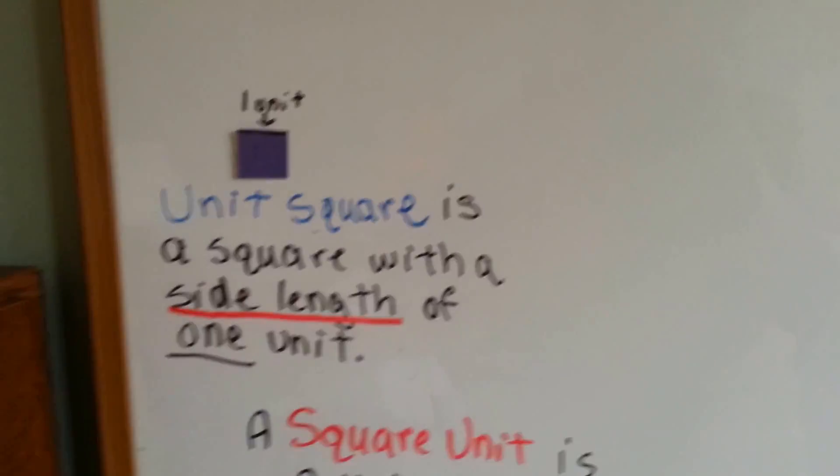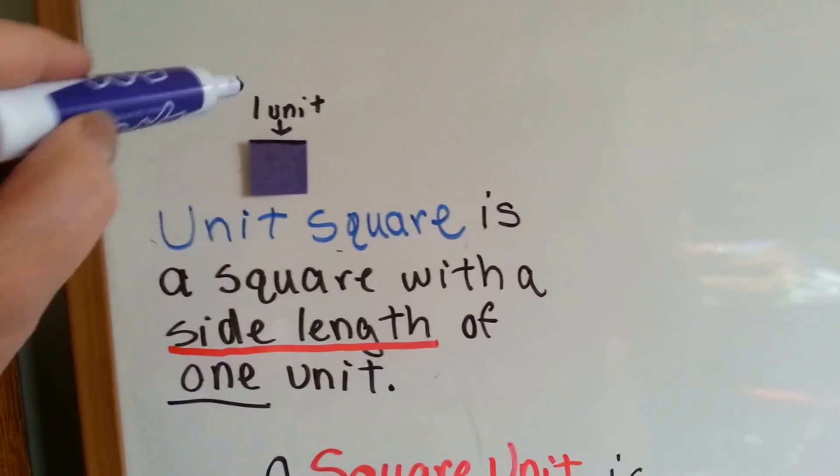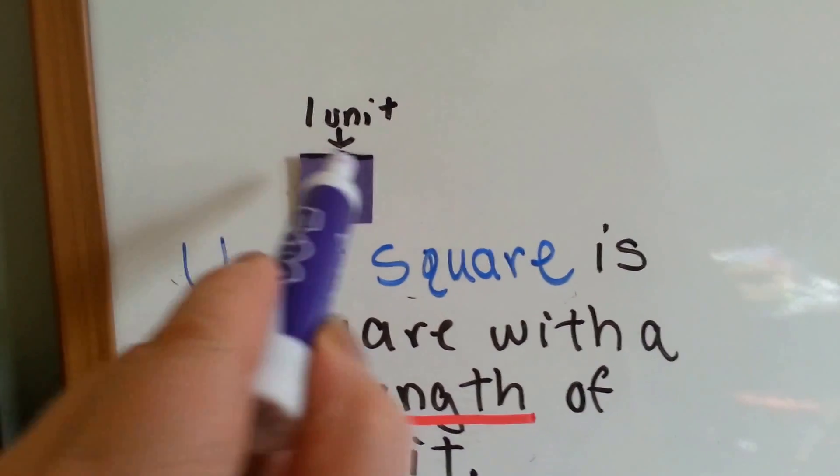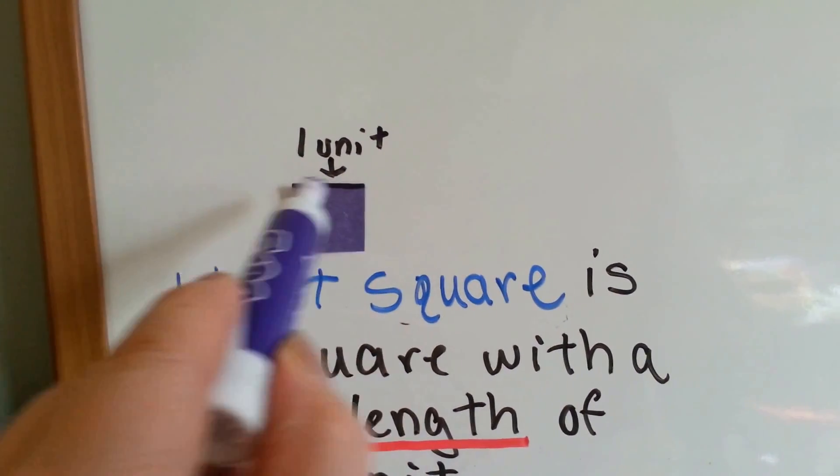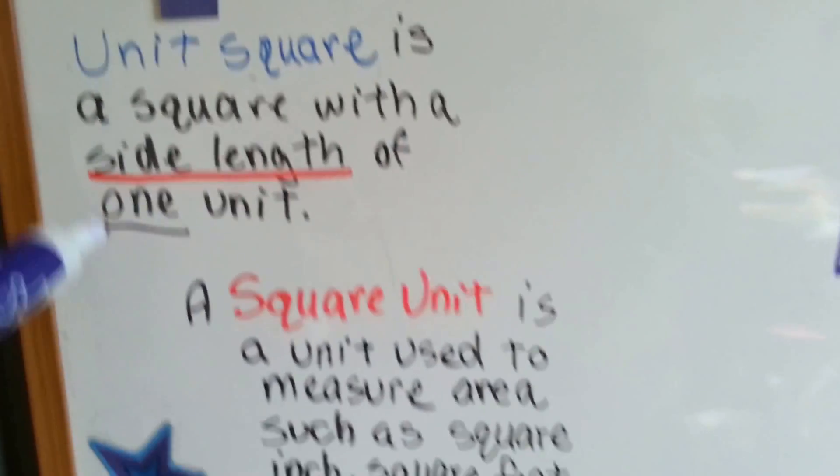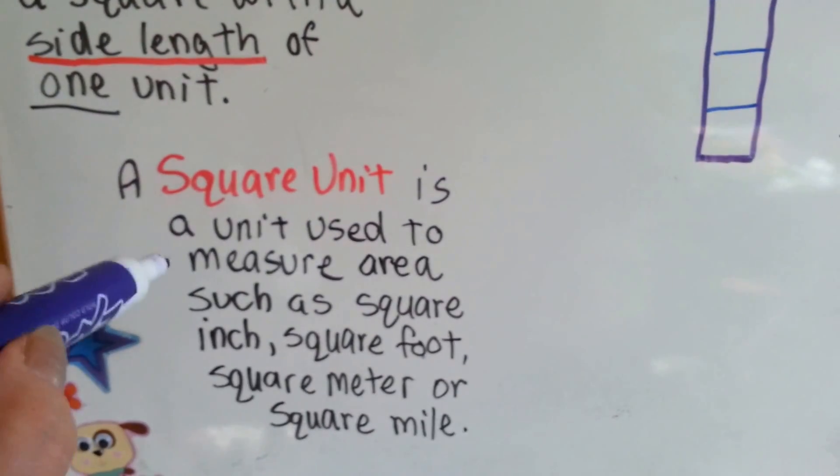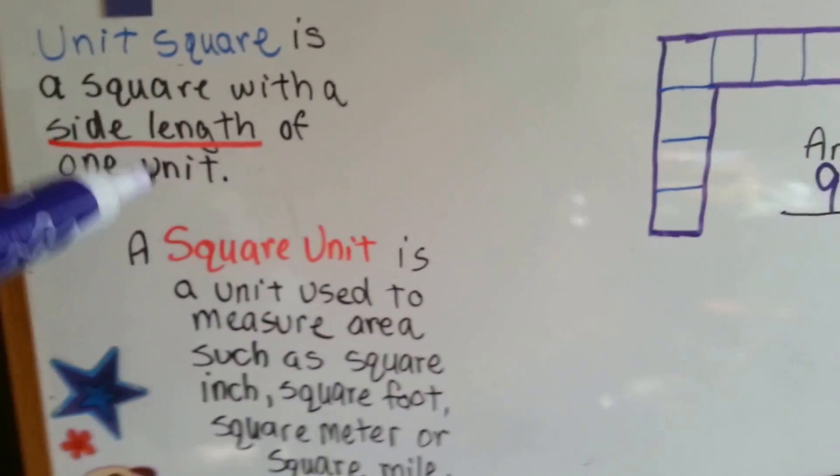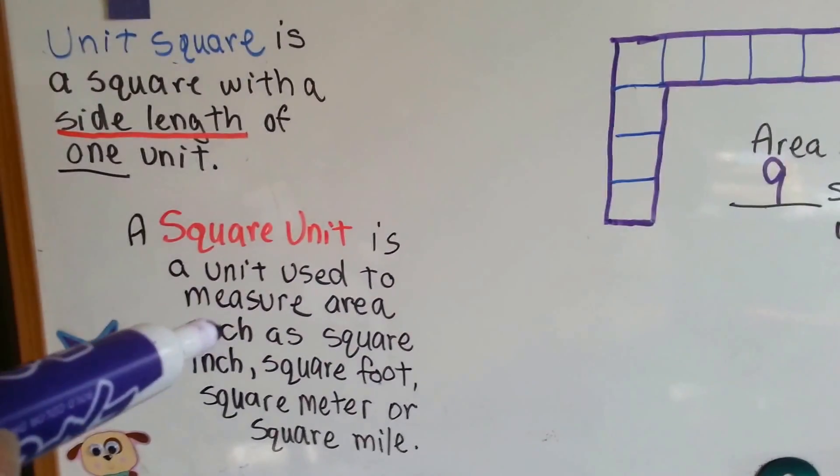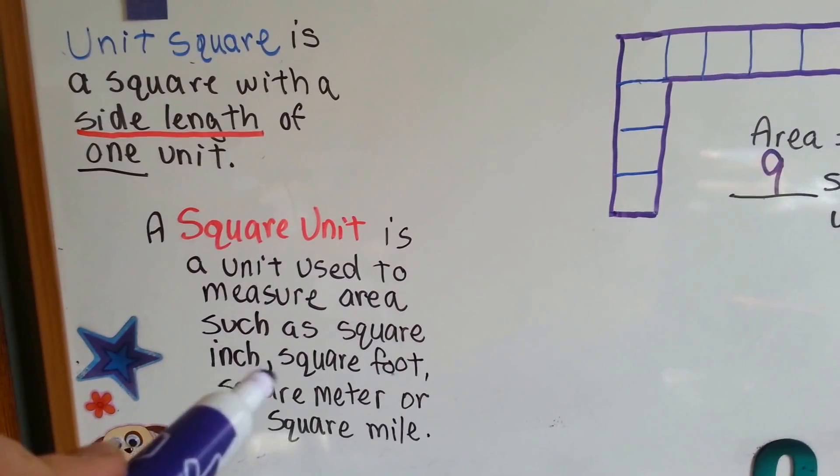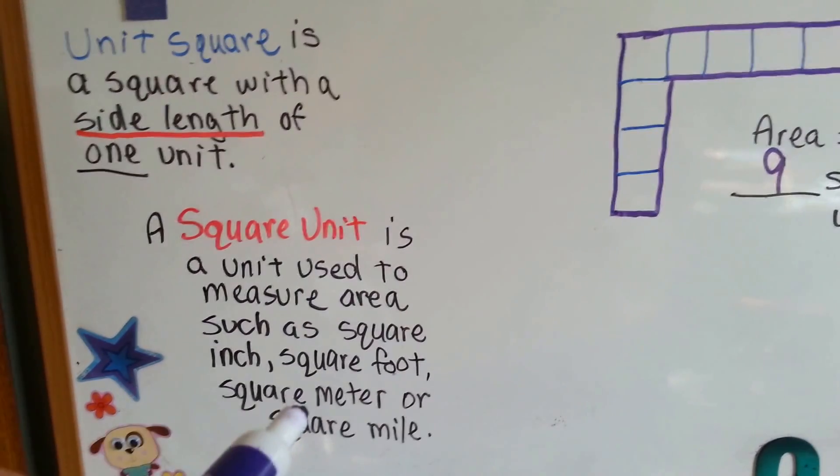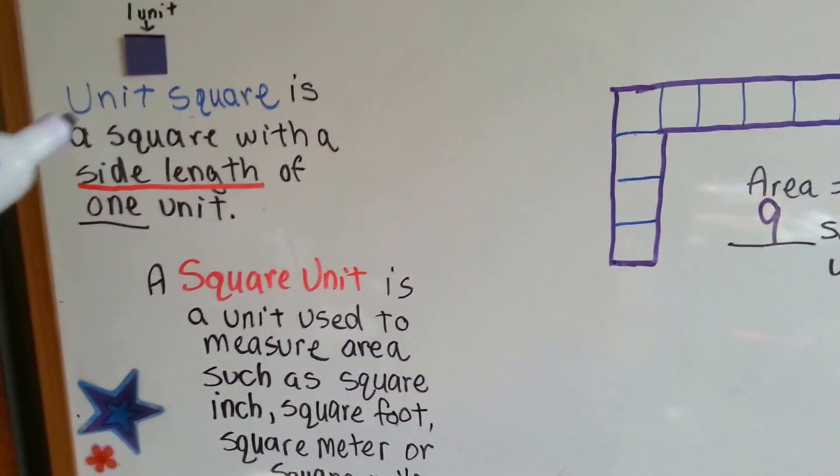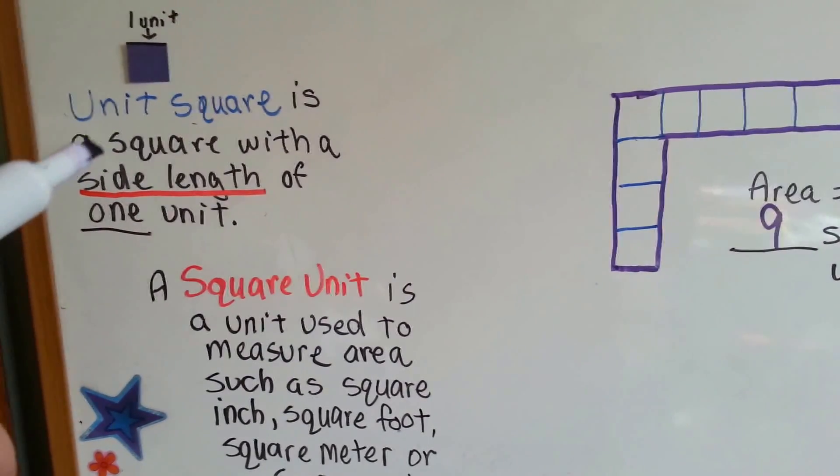So, what you need to remember is, a unit square is just a square, like this, with a side length of one unit. The side of it is one unit. A square unit is a unit used to measure areas such as square inch, square foot, square meter, or square mile. So, there is a difference between the two because the square unit actually uses a measurement, like an inch, or a centimeter, or a meter, where a square unit could be anything. It could be a crayon. It could be a paper clip. It could be anything. It's just a unit.